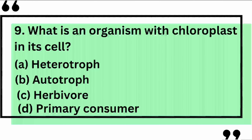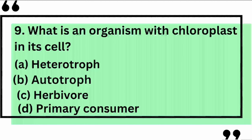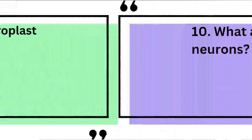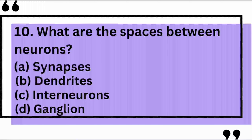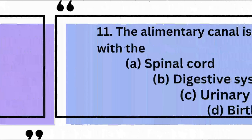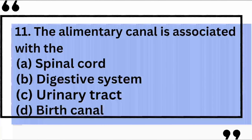What is an organism with chloroplasts in its cell? Yes, the correct answer is B: autotroph. What are the spaces between neurons? Yes, the correct answer is A: synapses.